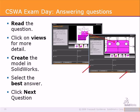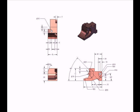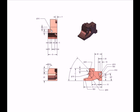Future tutorials will give you tips on creating models and determining mass properties. Remember to apply material and check mass properties. For each modeling question, you will be given a unique set of variables. For example, A is equal to 100, B is equal to 50, and C is equal to 63. You will have to put these variables into different drawing views and then create the model.